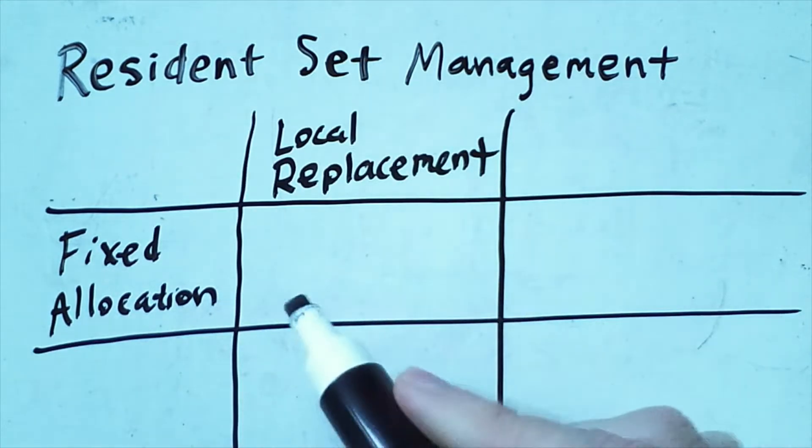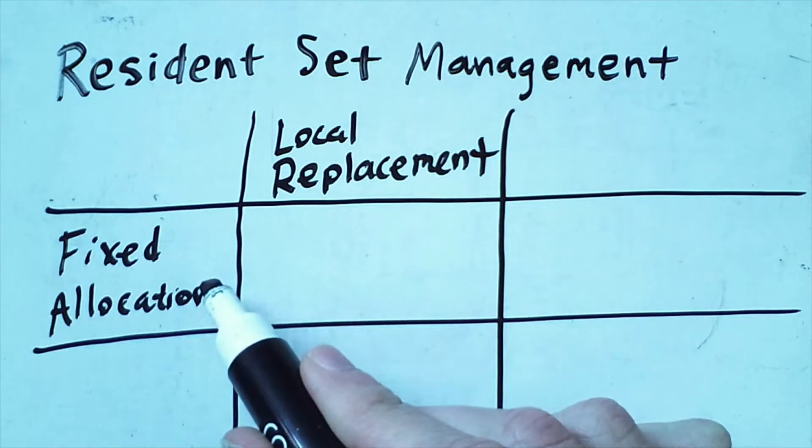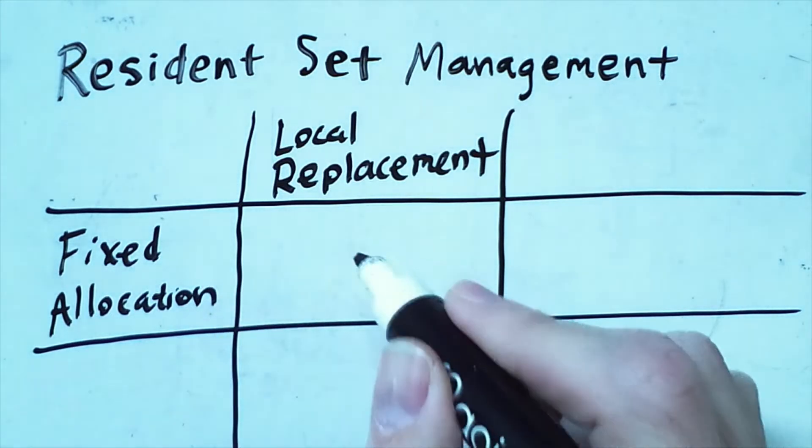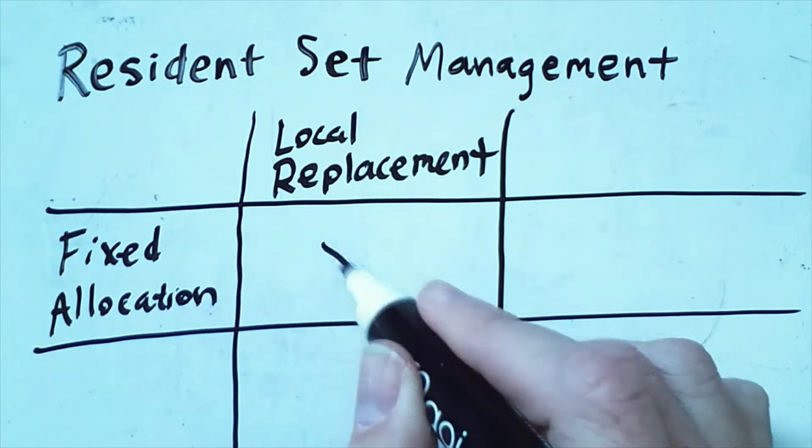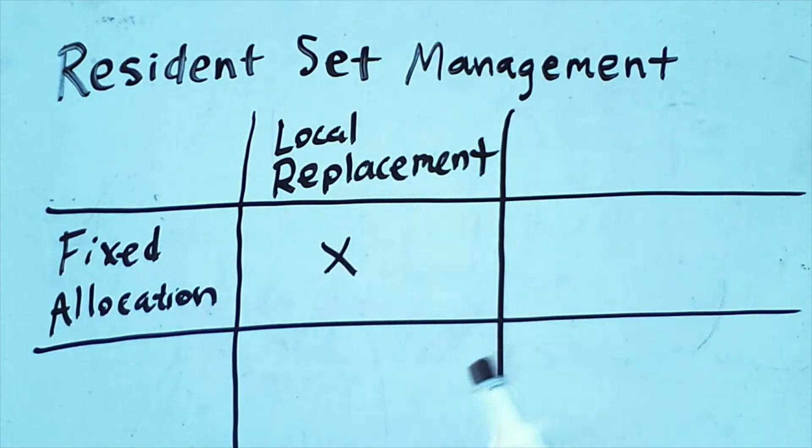In this scheme, we have a fixed number of frames assigned to each process, and whenever we replace one it must come from that process. Note that each process could have a different number.